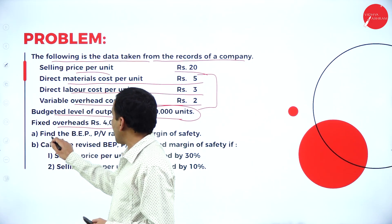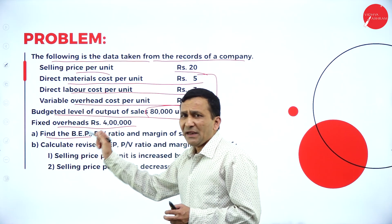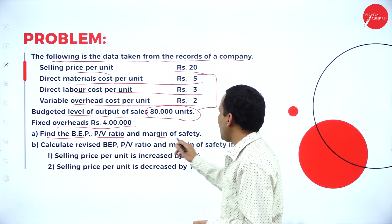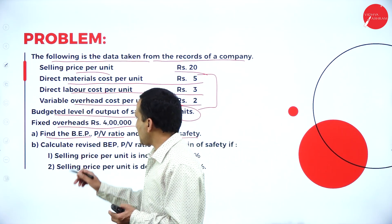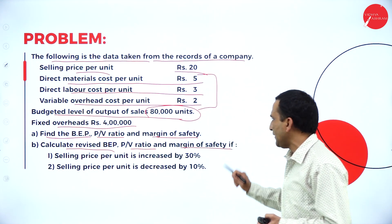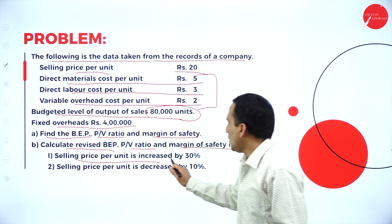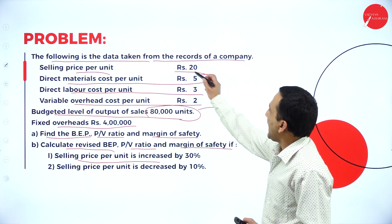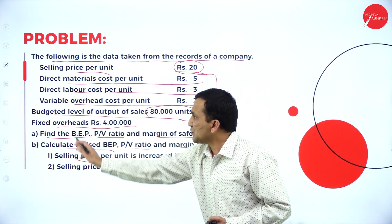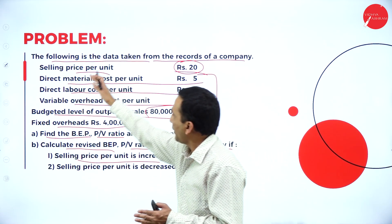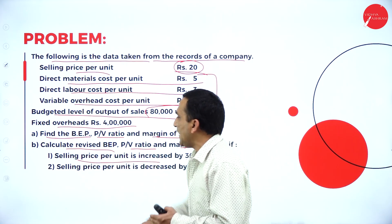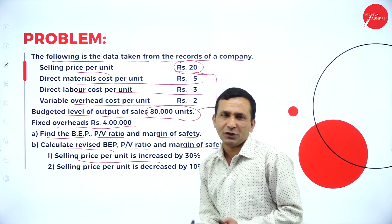There are two questions. First, find the BEP in units, BEP in sales, PV ratio, and margin of safety based on the normal information. Next, calculate the revised BEP, PV ratio, and margin of safety if the selling price increases by 30% — the actual selling price is ₹20.